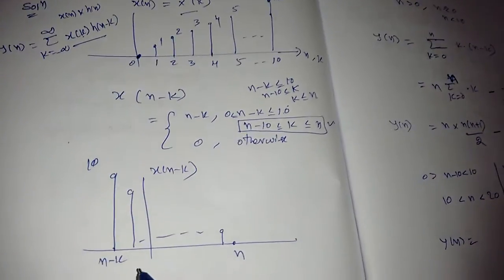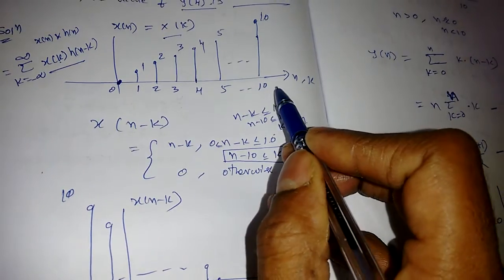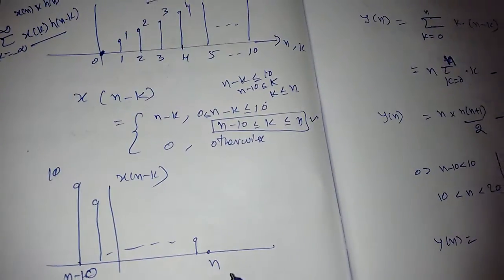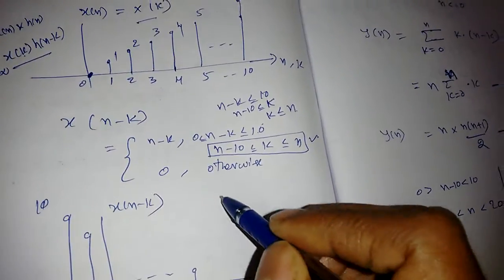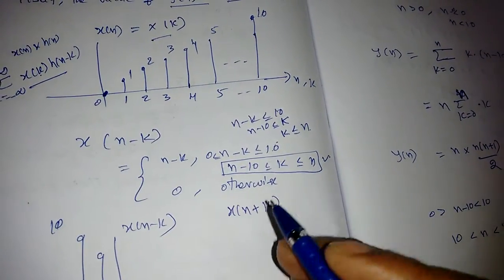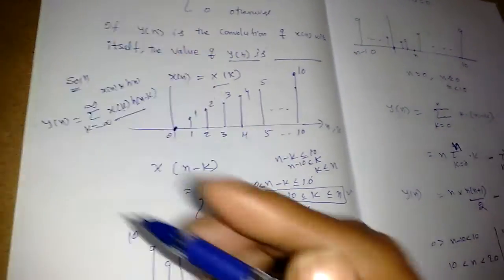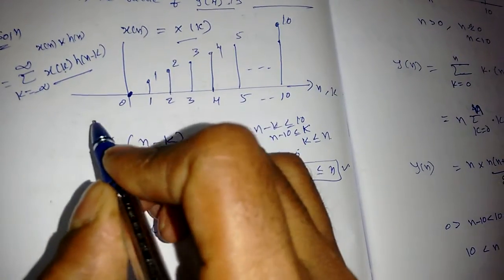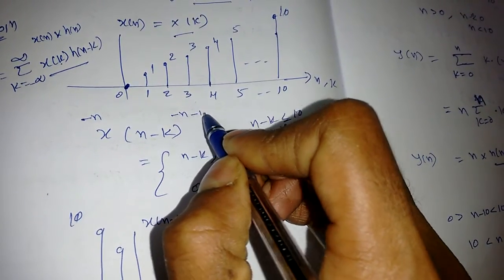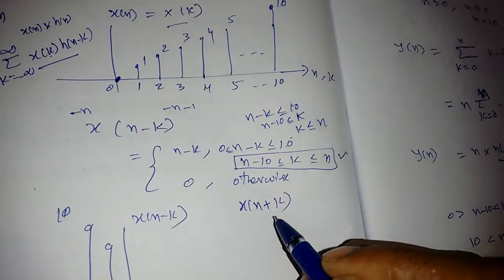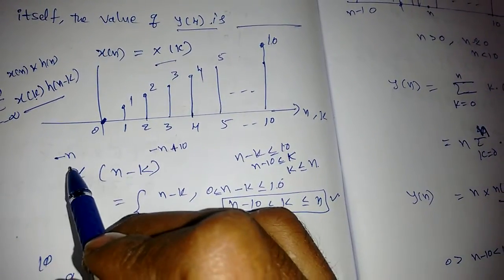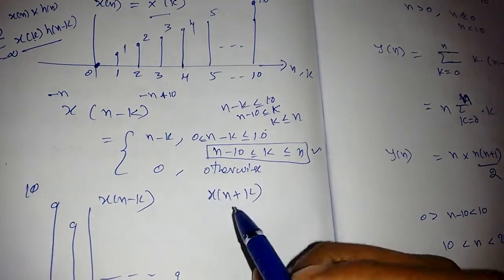The waveform of x[n-k]: wherever 10 was, it shifts to n-10, and wherever 0 was, it becomes n. For x[n+k], since there is a plus, it shifts towards the left side — wherever 0 is it becomes -n, and wherever 10 is it becomes -n+10.